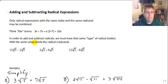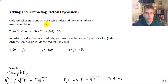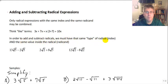The same index means we have to have all square roots, or all cube roots, or all fourth roots. So we have to have the same index, and then for the same radicand, we have to have the same number underneath the radical. In order to add and subtract radicals, we must have the same type of radical — the same index — and the same value inside the radical, the same radicand.